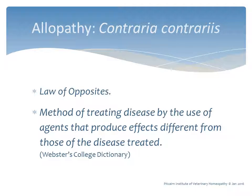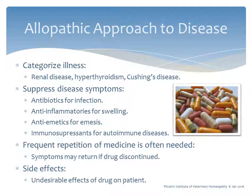To understand homeopathy, it is best to clearly define allopathy, or contraria contraris. Allopathy uses the law of opposites — a method of treating disease by the use of agents that produce effects different from those of the disease treated. In the allopathic approach, the first step is to categorize the illness, such as renal disease, hyperthyroidism, or Cushing's disease, and then apply a set protocol for addressing that illness.